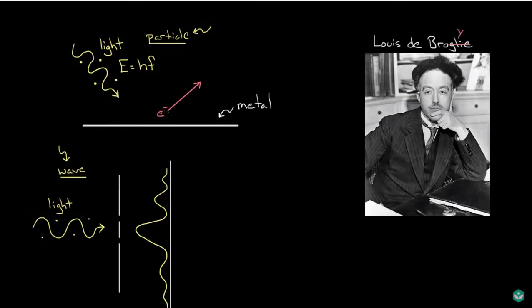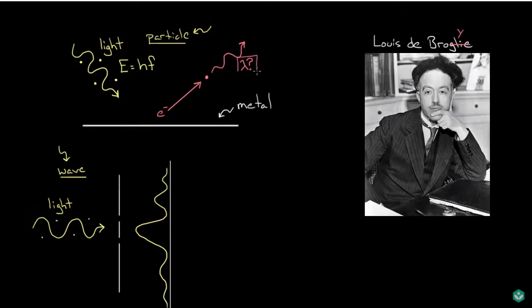Louis de Broglie said: what about the electron? If light, which we thought was a wave, can act like a particle, maybe electrons, which we thought were particles, can act like a wave — maybe they have a wavelength associated with them. He was trying to synthesize these ideas into one overarching framework in which you could describe both quanta of light and particles. Maybe everything in the universe can behave like a particle or a wave depending on the experiment being conducted.